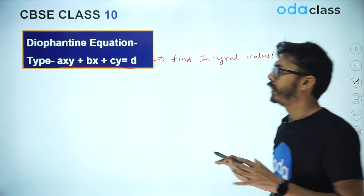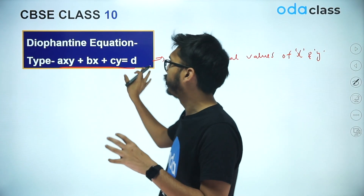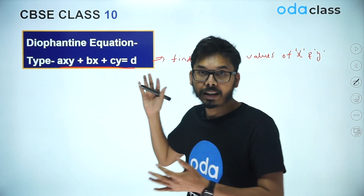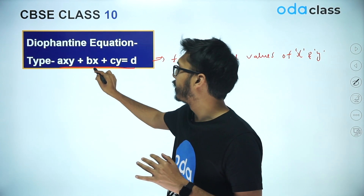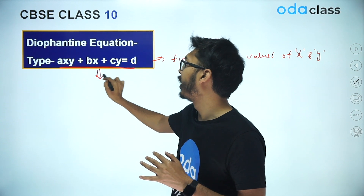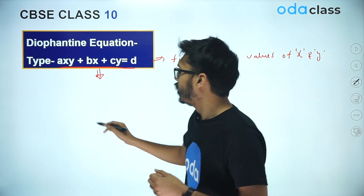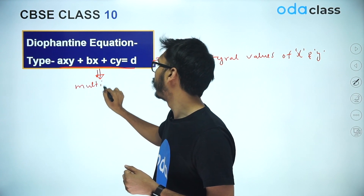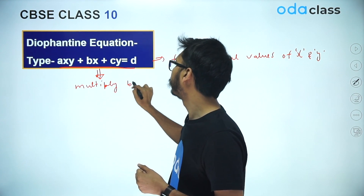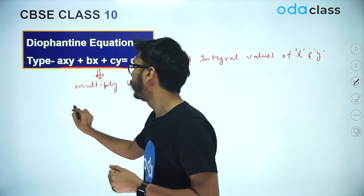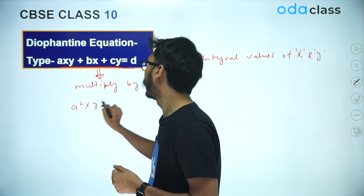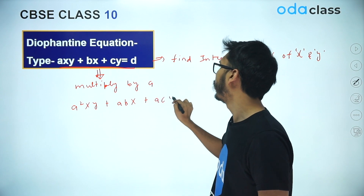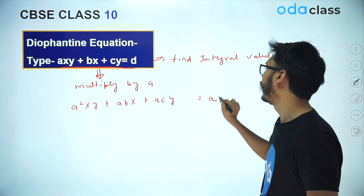The idea behind this is you have to factorize the whole expression, where A, B, C, D are integers. To do that, first you multiply the entire equation by A. So if you multiply by A, the equation becomes A²XY plus ABX plus ACY equal to AD.